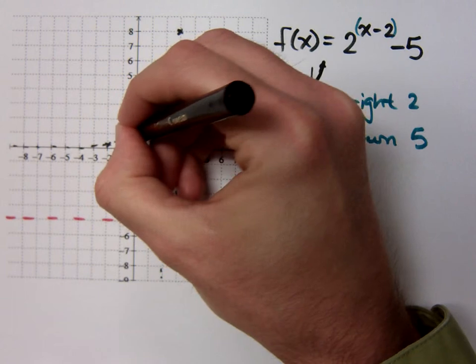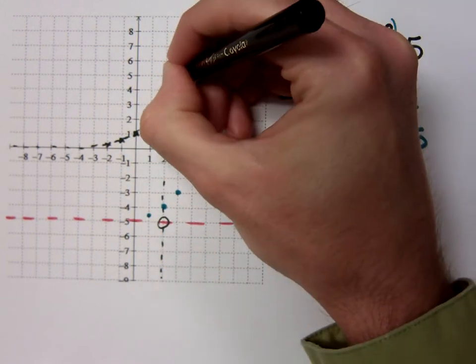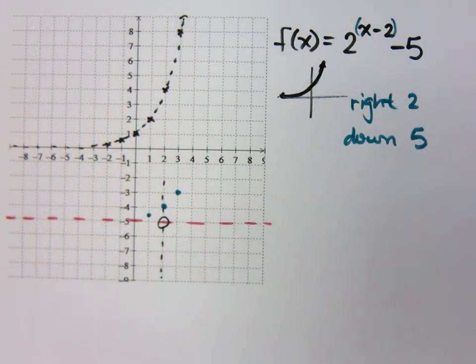This was your original exponential function right here. Did you all see that? Every single point that I had originally, I'm doing what? Right 2, down 5.